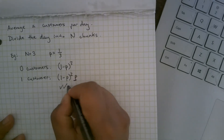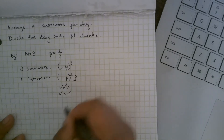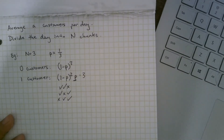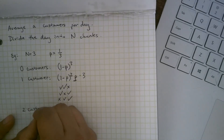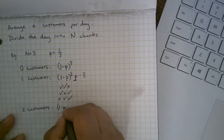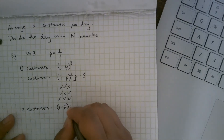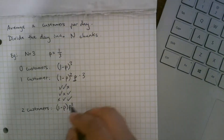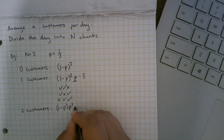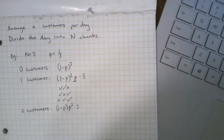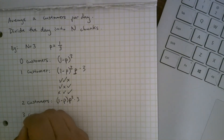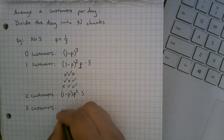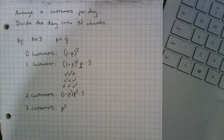Using C for customer and X for no customer, you could have CXX, XCX, or XCC — three possibilities — so multiply by three. For two customers it's similar: one chunk with no customers, two with customers, and again three arrangements, so multiply by three. The probability of three customers is simply p³ — that's CCC — only one way to arrange that. Note that total customers can never exceed n, but if n is large this won't be an issue.